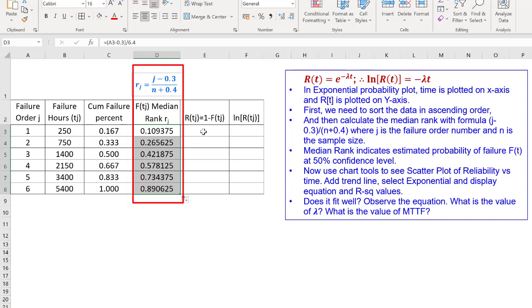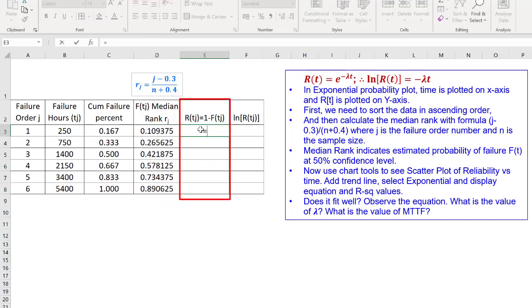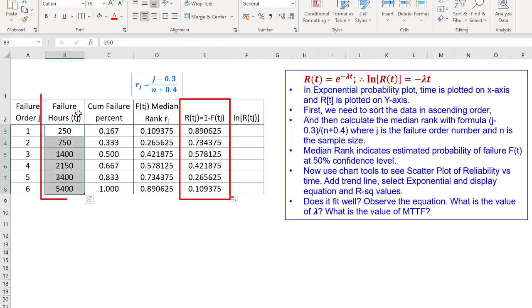Estimated probability of survival or reliability would be 1 minus this number. So, I select 1 minus the median rank. And that gives me the estimated reliability at those hours. The hours are given here and reliability is given here.